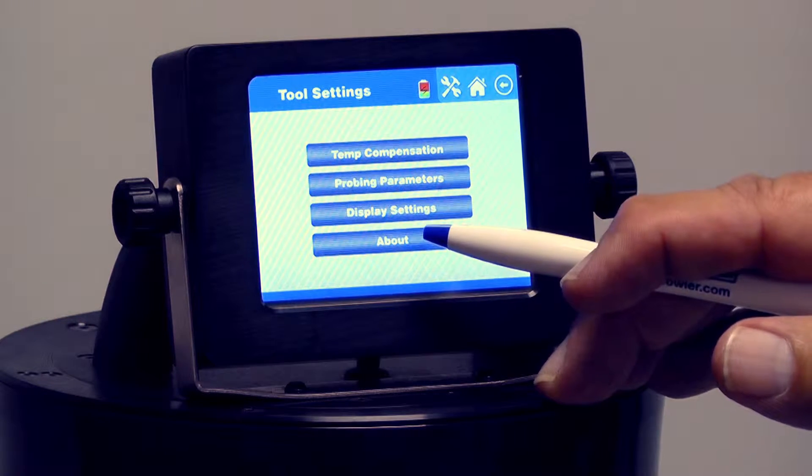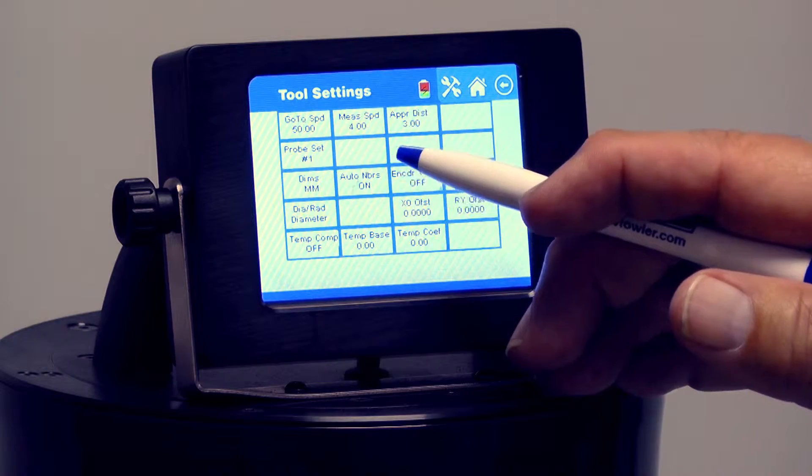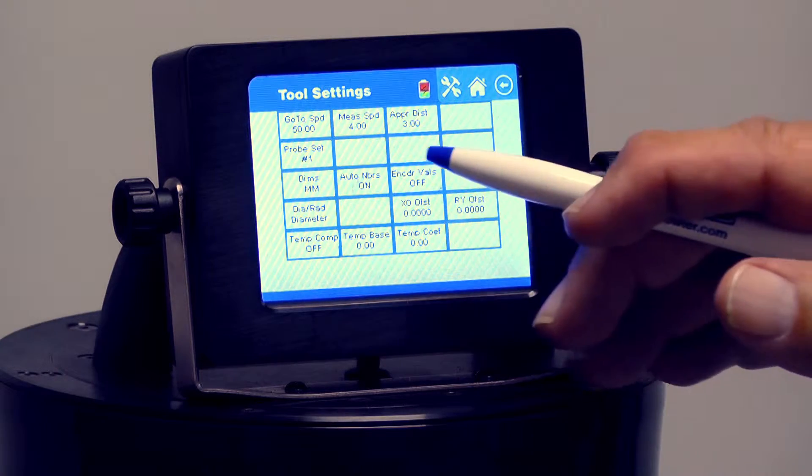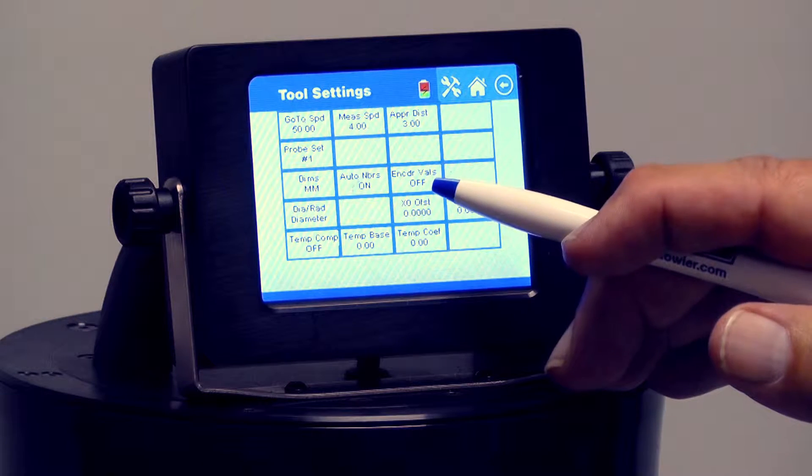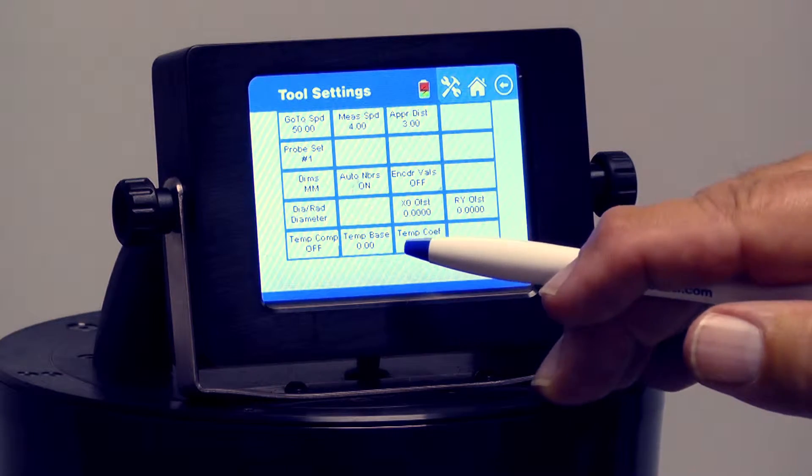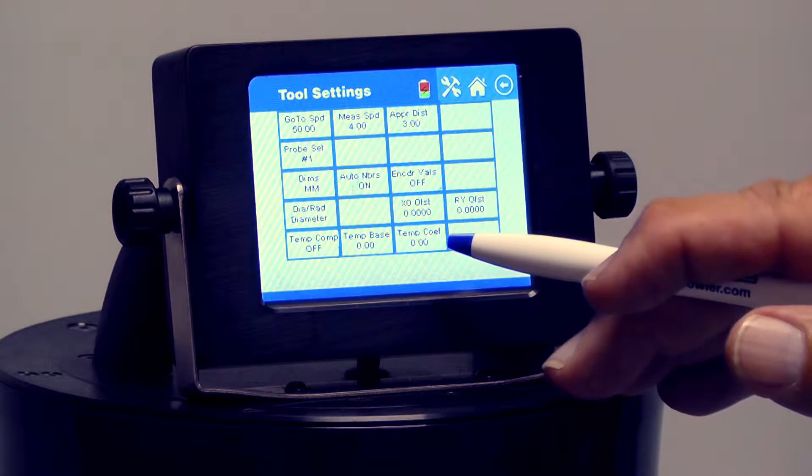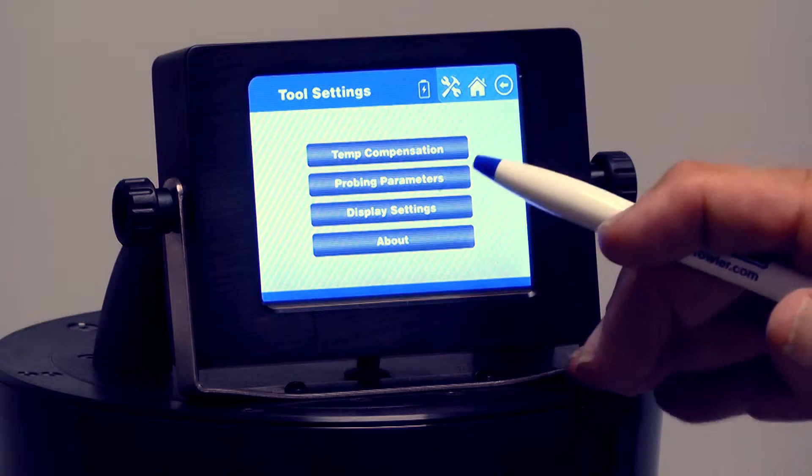About is just what version that we have here, but if I were to hit temperature compensation, it'll bring up another menu that gives me different options. One of them is to turn temperature compensation on or off, and it will show the temperature compensation of the base and the temperature coefficient. I'll go back.